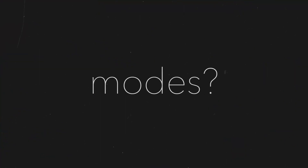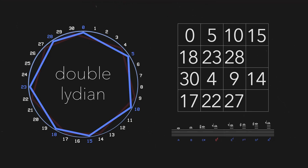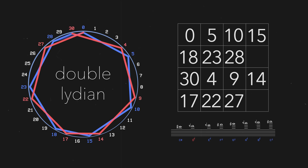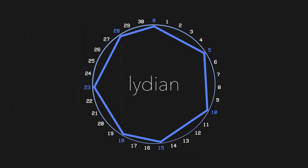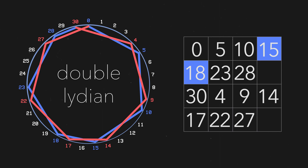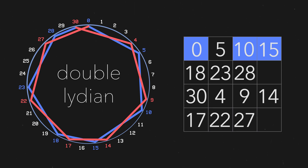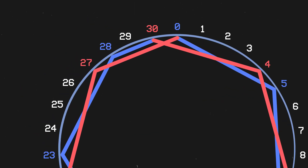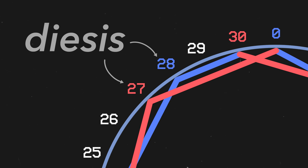So real quick again, what are double modes? Double modes are a two-octave microtonal expansion of our traditional modes, where octave two is half-flat of our prime octave. This evolution of, for example, Lydian to double Lydian, modeled here in 31-tone equal temperament, allows us to leverage the shimmer effect we observe in the falling diocese interval.